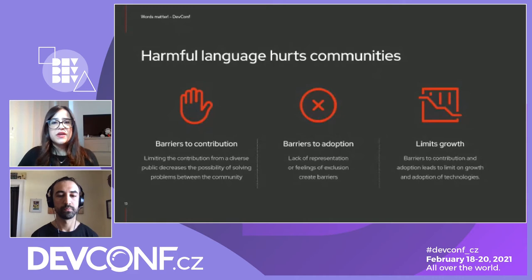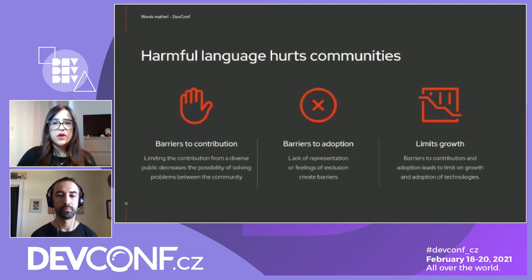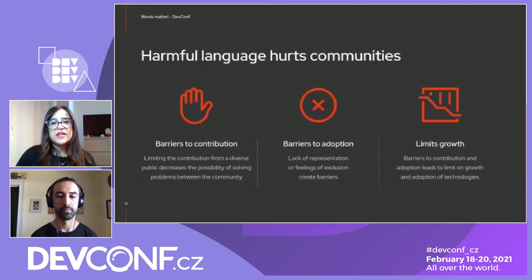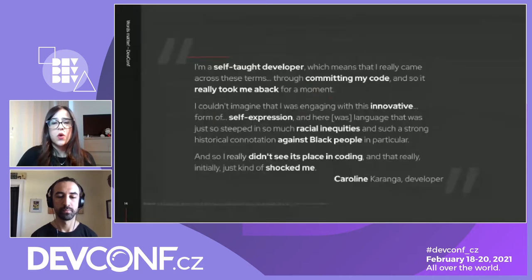Here is a quote from Caroline Couragia, a self-taught developer. She came across harmful language while committing her code, and it made her feel really uncomfortable because she was engaging with harmful language against Black people. It made her think that this kind of offensive language should not be in code.